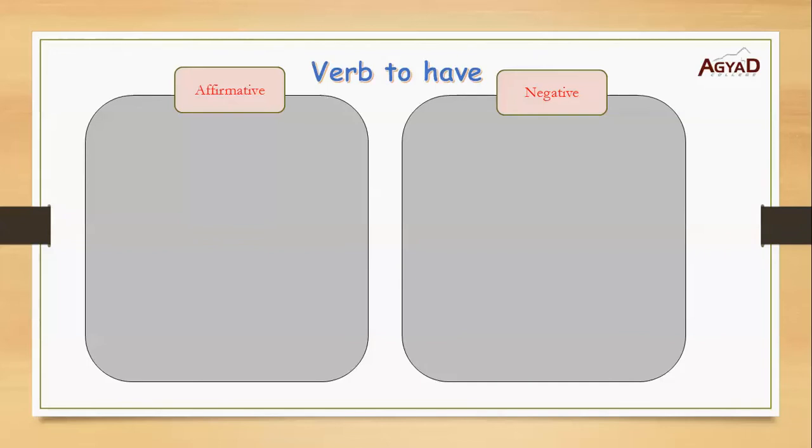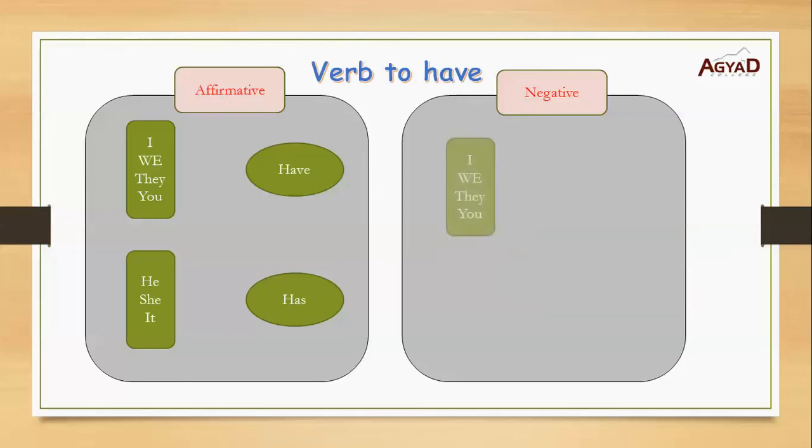Verb to have. We use verb to have when we're talking about things that we own. In the affirmative, we use have when the subject is I, we, they, you. And we use has when the subject is he, she, and it. In the negative form, we use don't have when the subject is I, we, they, and you. And we use doesn't have when the subject is he, she, and it.